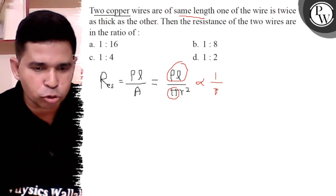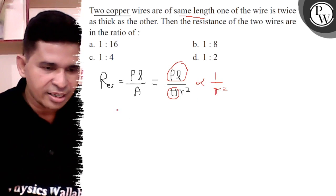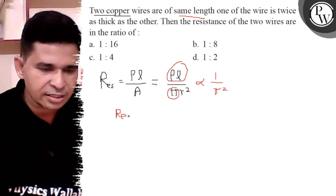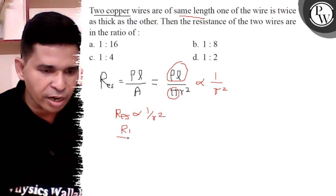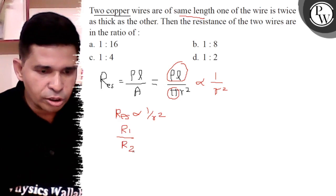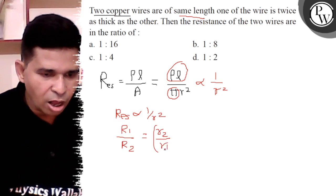So it is inversely proportional to the R square. So resistance is proportional to one by R square. So R1 upon R2 is equal to radius 2 upon radius 1, whole square.